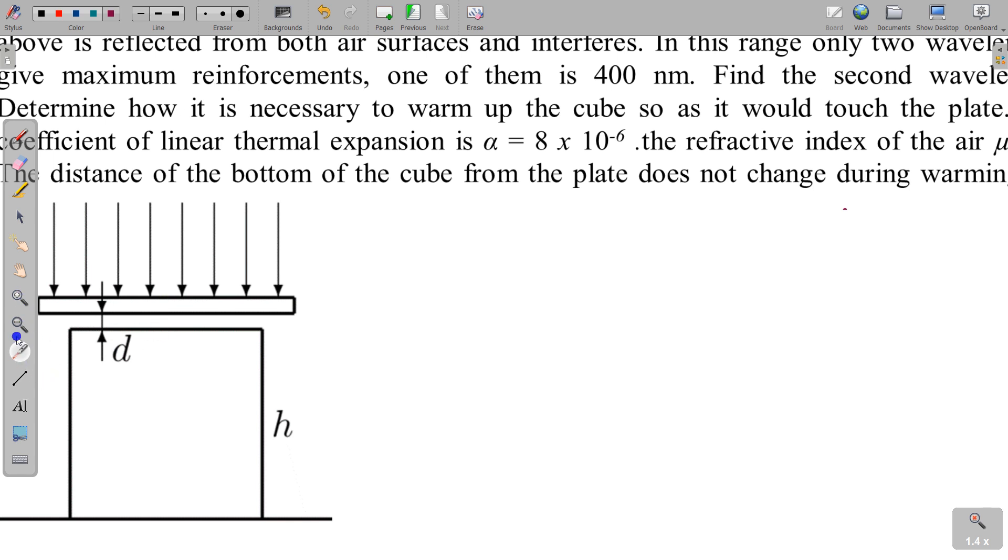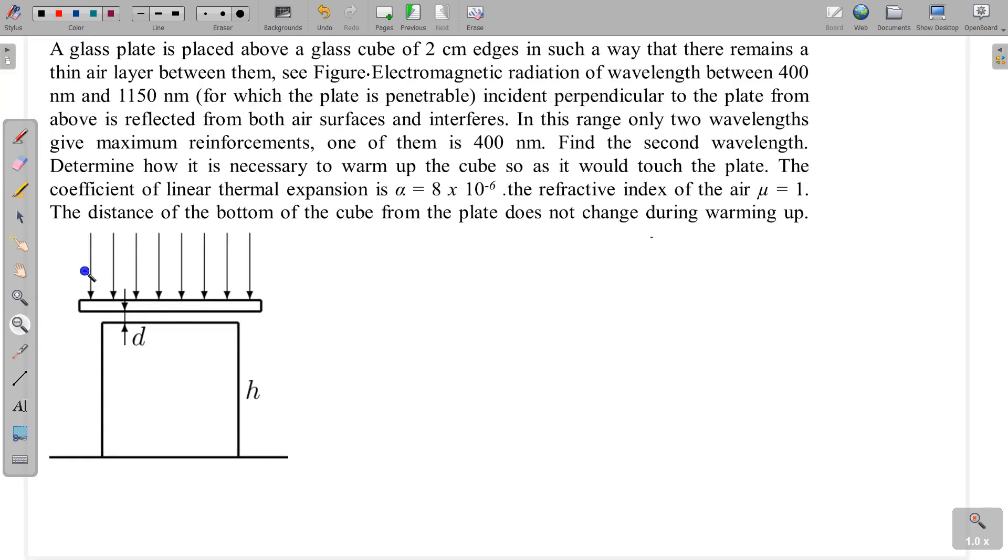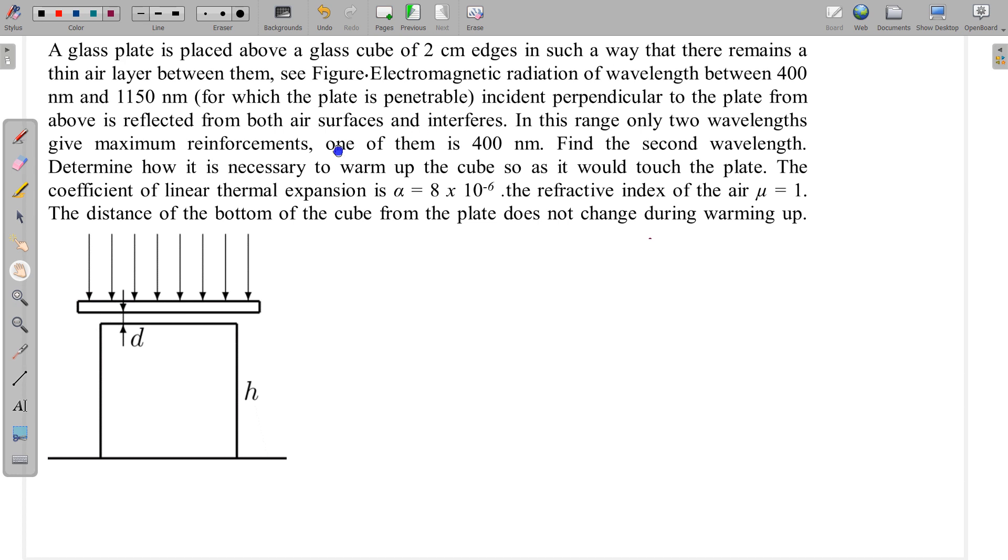So these two reflections you have to consider and these two reflected rays interfere. In this range only two wavelengths give maximum reinforcement, maximum reinforcement means constructive interference. One of them is 400 nanometer. So, 400 nanometer has constructive interference and there is one more wavelength. Find the second wavelength. So one wavelength is given, we have to find the another wavelength.